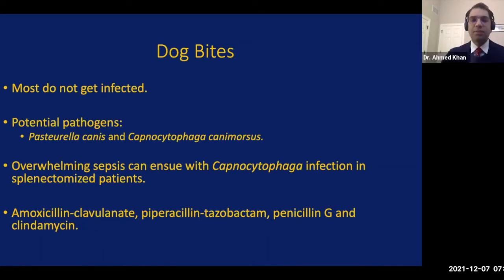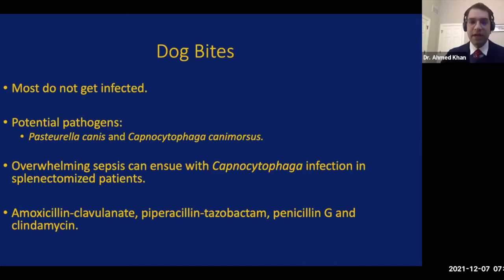Next we talk about dog bites. As opposed to cat bites, most dog bites do not get infected. In addition to other common pathogens, organisms typical to dog bites include Pasteurella canis and Capnocytophaga canimorsus. It is important to briefly mention the role of Capnocytophaga canimorsus in people who have had a splenectomy — in these people it can cause overwhelming sepsis and mortality, so it is important to recognize these patients and treat them promptly. In addition to local care, a beta-lactam/beta-lactamase inhibitor or penicillin G, with or without clindamycin, should be used.